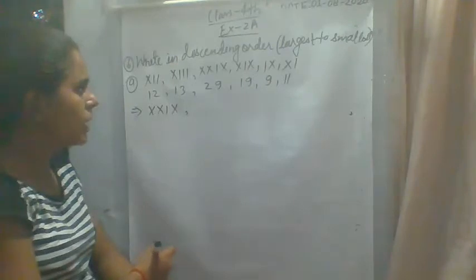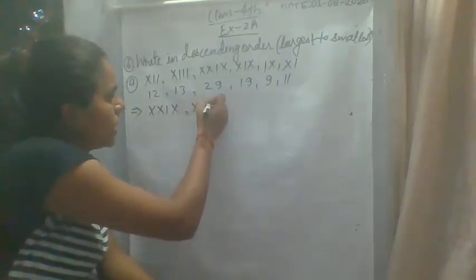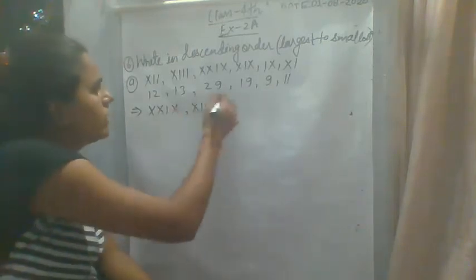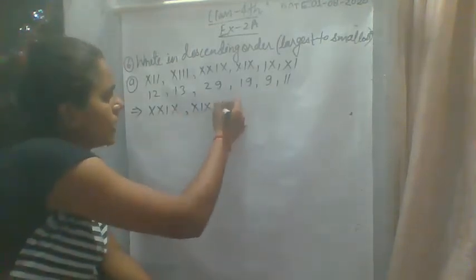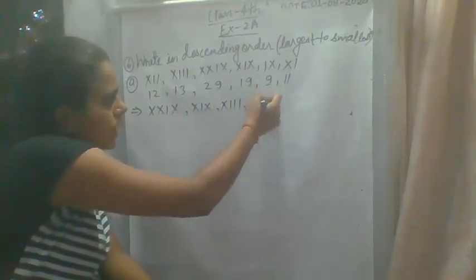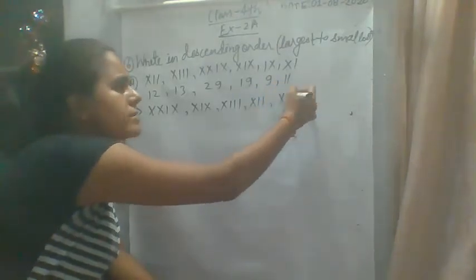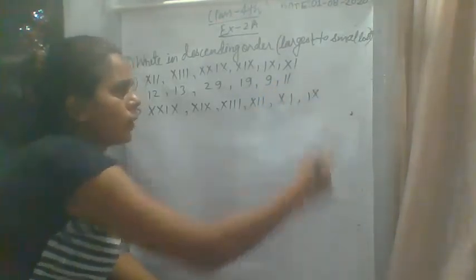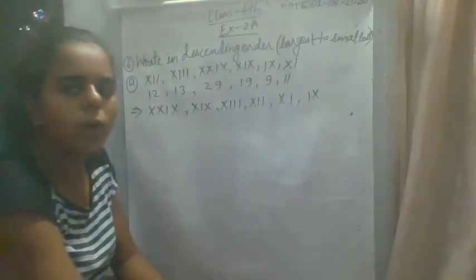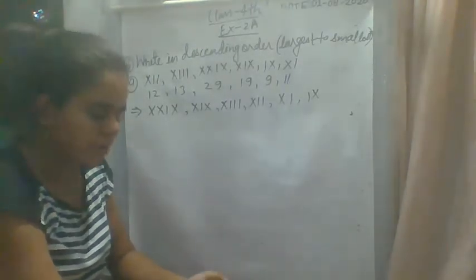Then what number is next? Nineteen. Then 13. Then what is yours? Thirteen. Then what is yours? Twelve. Then eleven, and then the smallest number is nine. So this was your descending order of Roman numbers.